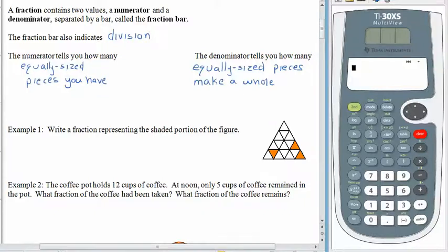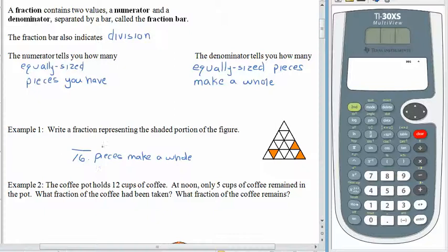So let's start off with some easy stuff — writing a fraction to represent the shaded portion of the figure. The first thing we need to do is figure out the denominator: how many pieces make a whole. And we just count: 1, 2, 3, 4, 5, 6, 7, 8, 9, 10, 11, 12, 13, 14, 15, 16 pieces make a whole. Then we look at how many pieces are shaded — that's easy, it is 3. So there are 3 shaded pieces, 16 pieces make a whole, and each of those pieces is called a sixteenth.